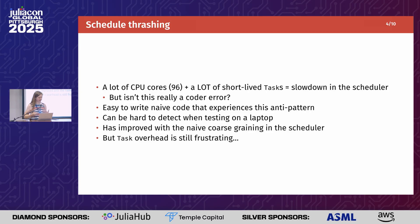This has improved now that we've had naive coarse graining since around 1.8, but there's still some room for improvement, which we'll probably hear about later. The task overhead can become really frustrating if you have like millions of loop iterations that you want to thread over. Maybe the answer is just don't do that, but for now people like me are still trying to do it, and the overhead is kind of annoying.